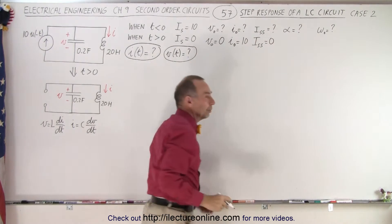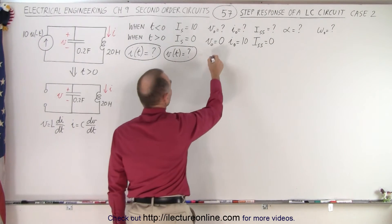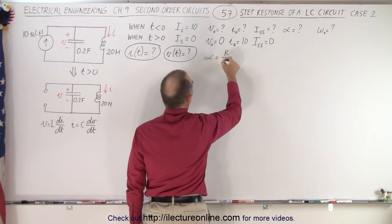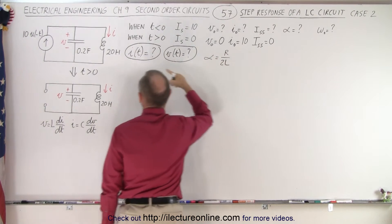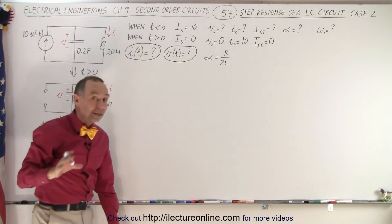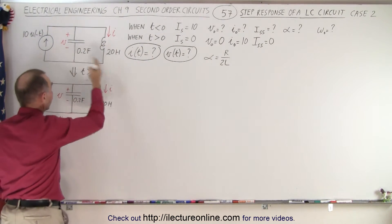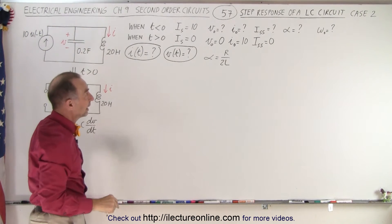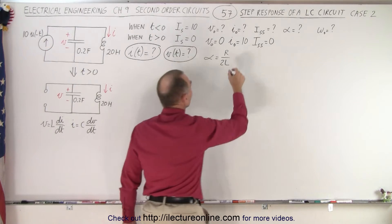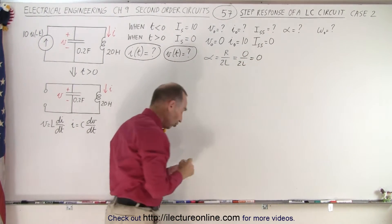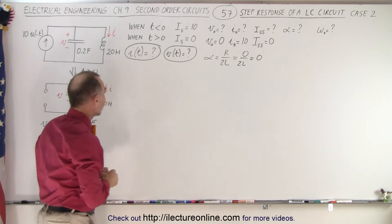What about alpha? Alpha can be calculated using the equation R divided by 2L. Why R divided by 2L? Because this will act like a series circuit, not a parallel circuit. The current will just simply go back and forth. And so that means there is zero resistance divided by 2L, which is equal to zero for alpha. There's no damping factor whatsoever in this circuit.